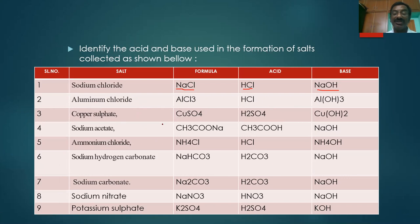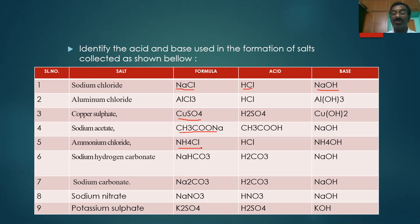Copper Sulphate (CuSO4): the positive ion comes from the base Copper Hydroxide, and the negative ion comes from the acid Sulphuric Acid. In a salt, the positive radical (cation) comes from a base and the negative ion (anion) comes from an acid. Sodium Acetate is derived from Acetic Acid and Sodium Hydroxide. Ammonium Chloride is formed by the neutralization of HCl and Ammonium Hydroxide.